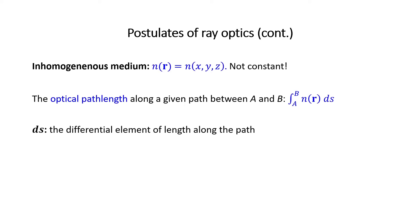Here, ds is the differential element of length along the path. You have probably seen this kind of integration in calculus too. Again, the travel time from a to b is proportional to the optical path length. We can simply divide it by C0 to get the travel time.